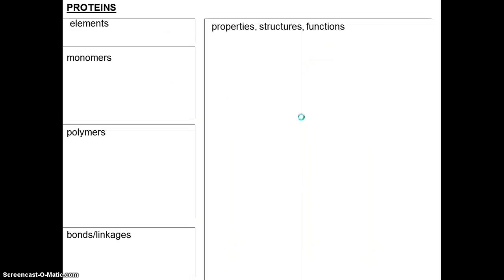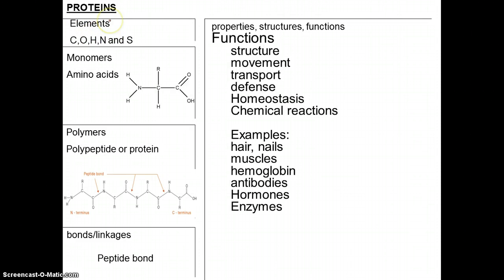All right, go ahead and summarize about proteins — this is a good place to pause. So to quickly summarize: proteins are made of carbon, oxygen, hydrogen, nitrogen, and sulfur. The monomer is called amino acid. The polymer is called peptide. All amino acids are linked by peptide bonds. Their functions include structure, movement, transport, defense, and so forth. Following are the examples.